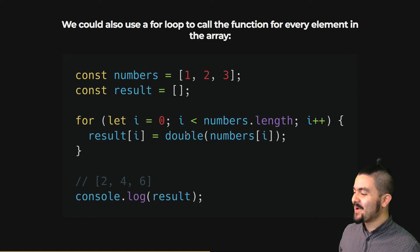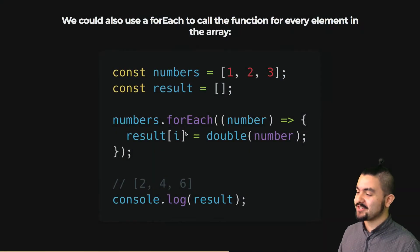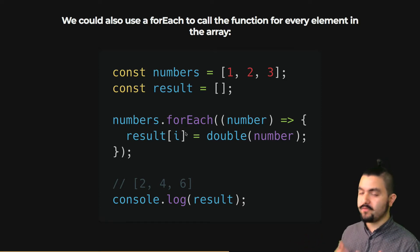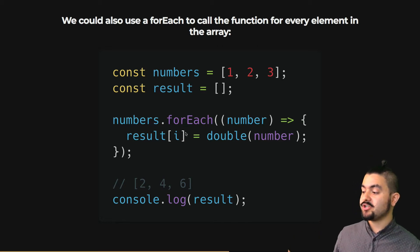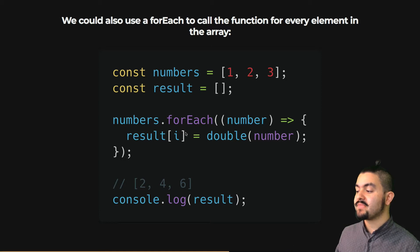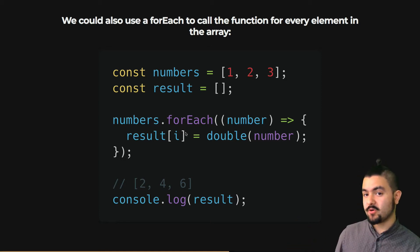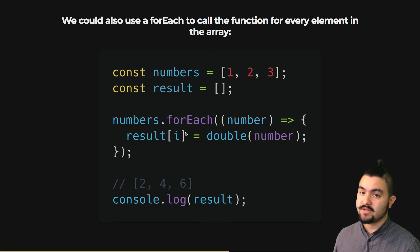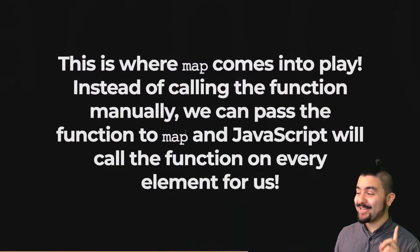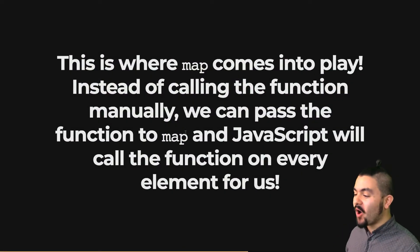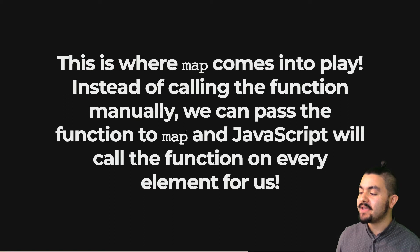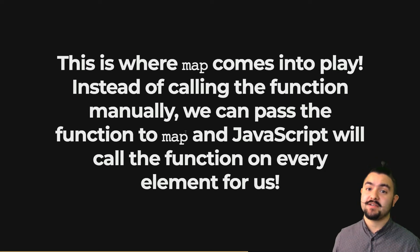We can do even better — we could use the built-in forEach function. Again, we're calling double manually each time, but this is a little bit cleaner because we don't have the whole for loop with the iteration. So we do a forEach over numbers with the values 1, 2, and 3, and then for each number, we invoke double to get back that doubled number and store it in the result array, ending up with 2, 4, and 6. This is where map comes into play — instead of having to call that function manually every time, we can just pass that function into map and JavaScript will call the function on every element for us.